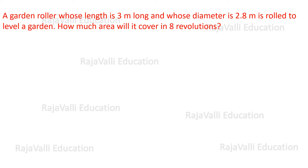Hello friends, welcome to Rajavala Education channel. A garden roller whose length is 3 meters long and whose diameter is 2.8 meters is rolled to level a garden. How much area will it cover in 8 revolutions?